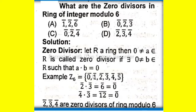For example, Z₆ = {0, 1, 2, 3, 4, 5}. 2·3 = 6 ≡ 0 (zero divisor), and 4·3 = 12 ≡ 0 (zero divisor).